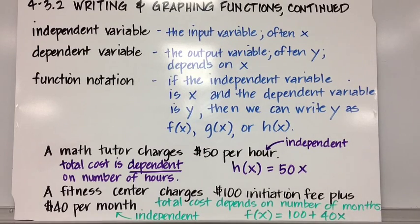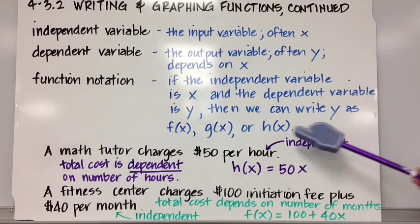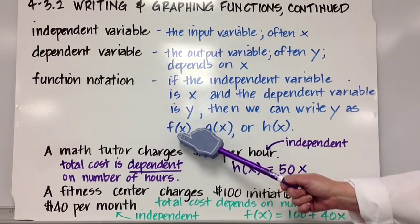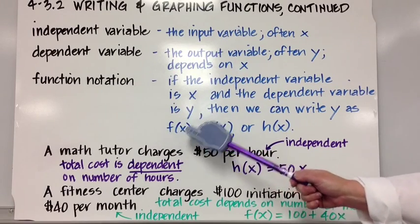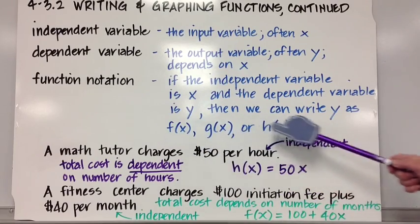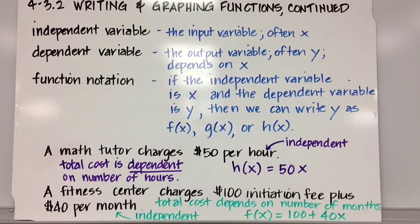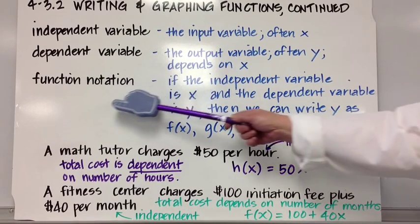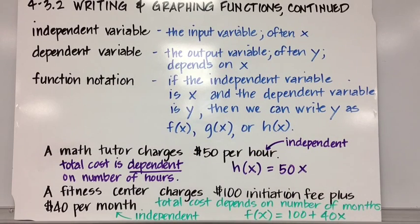If the independent variable is x and the dependent variable is y, then we can write y as f(x), g(x), or h(x). We say 'f of x,' but that's actually f with parentheses around the x. It's just a form of writing it. Notation is all that it is, so don't freak out about it. Let's see how independent variable, dependent variable, and function notation works.